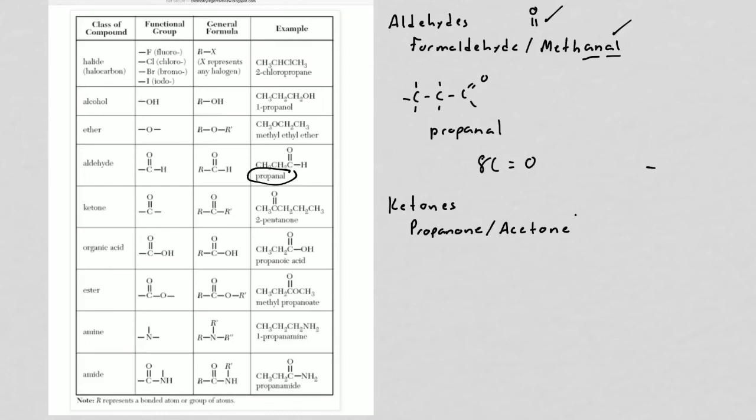Ketones have their double bond oxygen somewhere in the middle of the chain. An aldehyde is at the end of the chain, and ketones are somewhere in the middle. Because they're somewhere in the middle, they're going to need a number. The most common example of this is propanone, which is acetone. For propanone, you don't need a number because if it's a ketone, the double bond oxygen has to be in the middle, and there's only one middle carbon when you have three carbons. This is basically propanone, also known as acetone, which is what you use to remove nail polish.